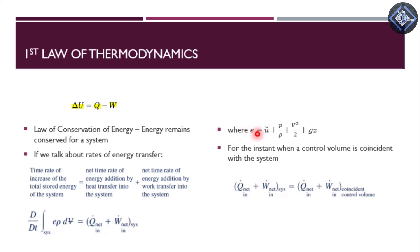We define the total energy per unit mass as e = ũ, where ũ is the internal energy of the system, plus p/ρ which is the pressure energy or energy due to pressure stored in the system, plus V²/2 which is the kinetic energy of the system, and gz which is the potential energy of the system.